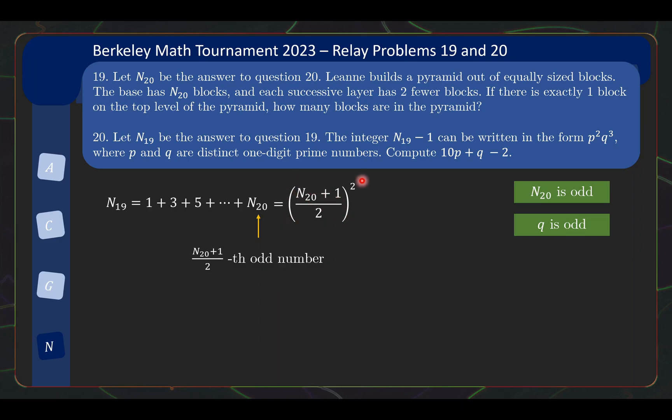But we can now take this expression and substitute it into question 20. So question 20 needs you to work with the number N19 - 1. So we substitute in the answer for question 19 into this expression here. So now we have this expression being equal to p²q³. But this is of the form a² - b². So I can write it as (a+b)(a-b), which is the product of these two terms here.